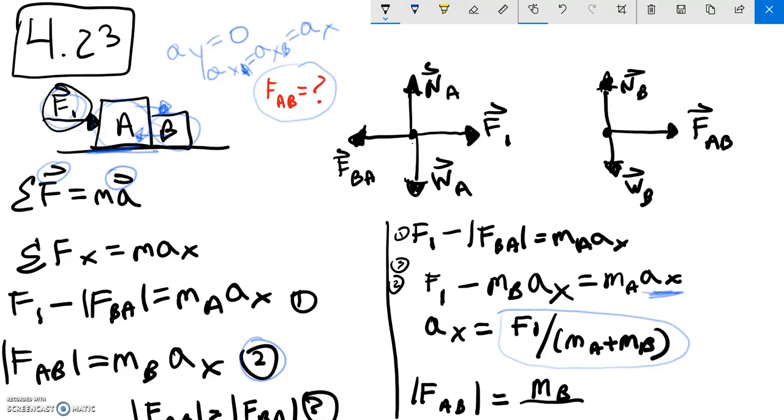And get the magnitude of A on B is equal to m_B over m_A plus m_B times F1. And if you put the numerical values from your book, you will get about 50 newtons.